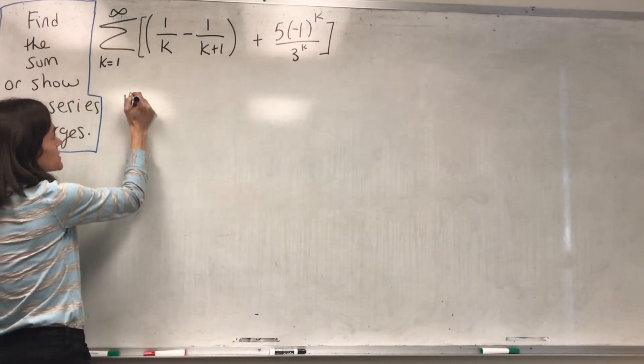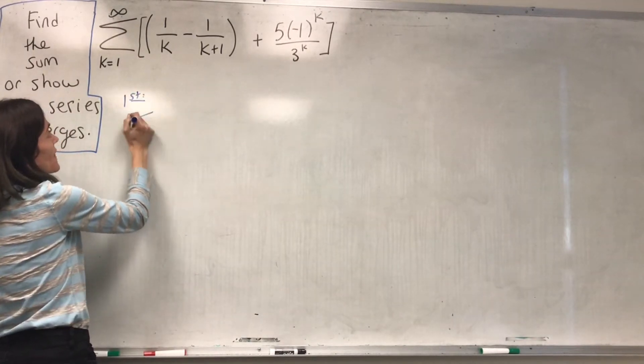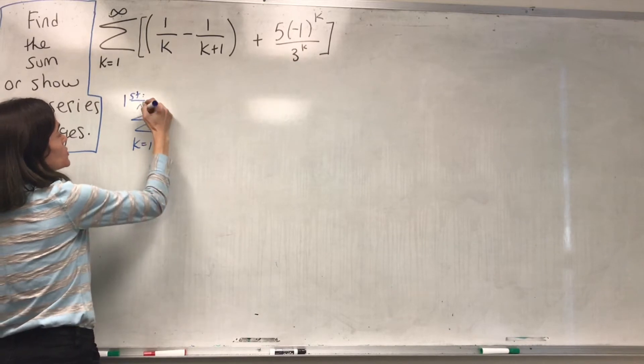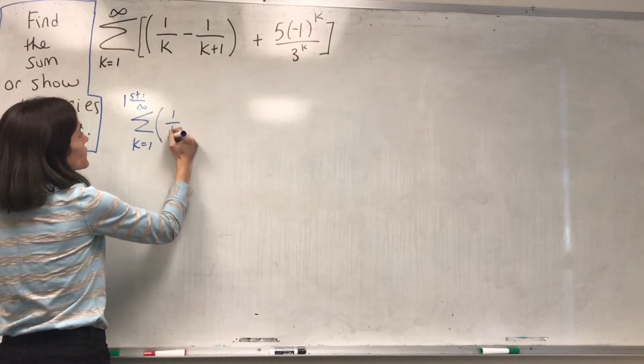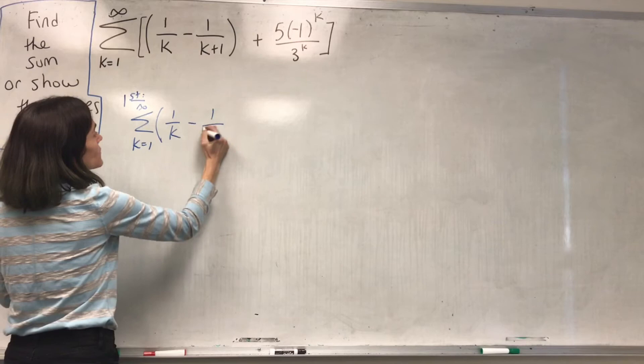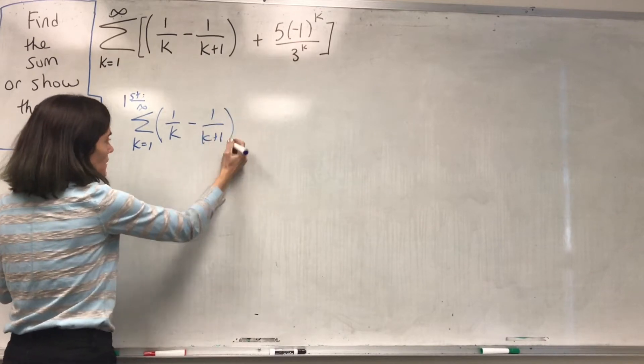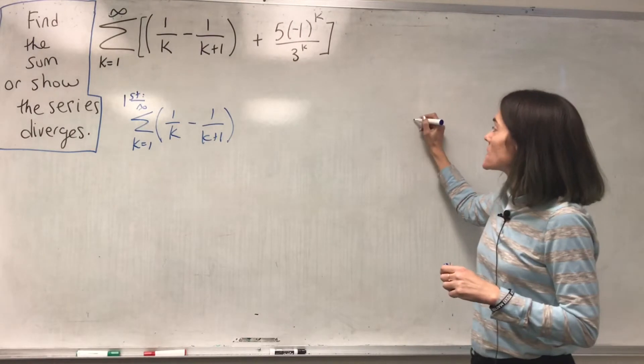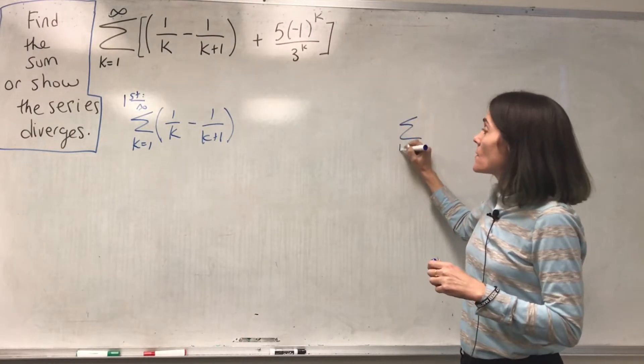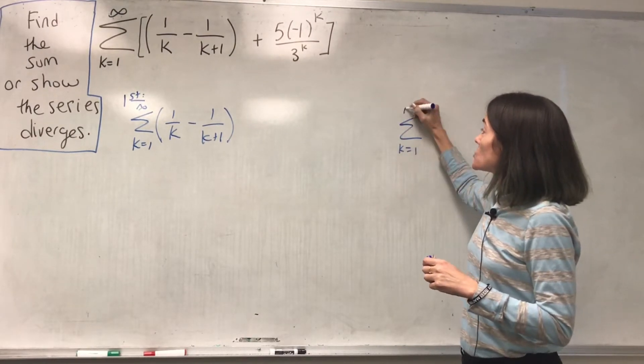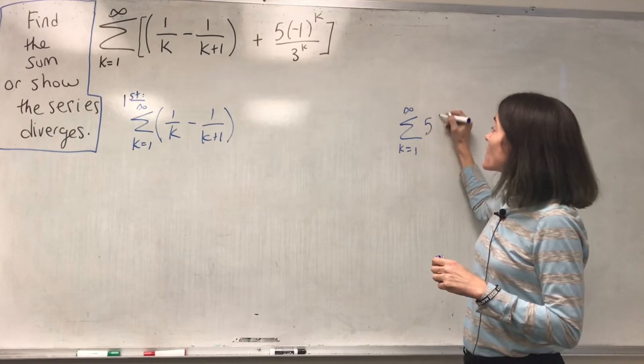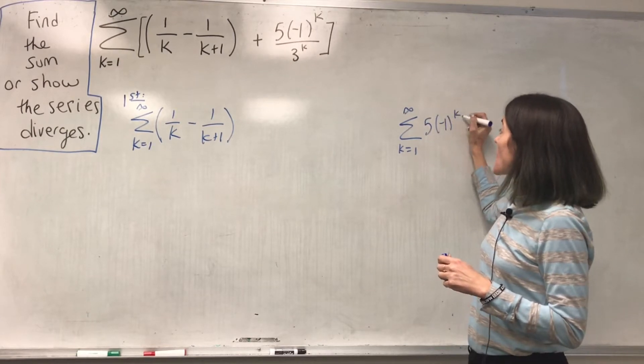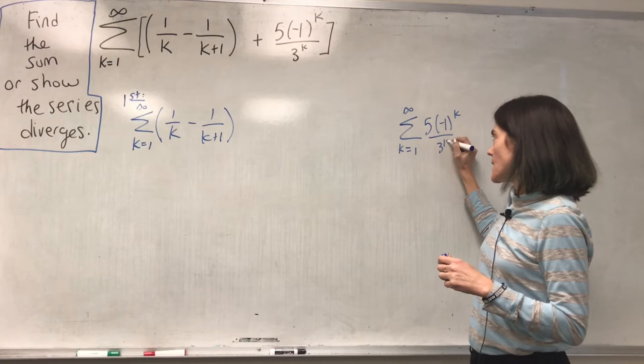So first, we will look at this series, k equals 1 to infinity of 1 over k minus 1 over k plus 1. And then we will look at the following series, the sum k equals 1 to infinity of 5 times negative 1 to the k over 3 to the k.